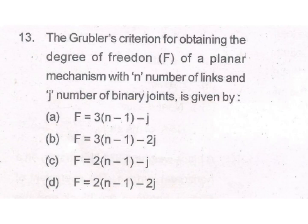The Grübler's criterion for obtaining the degree of freedom F of a planar mechanism with N number of links and J number of binary joints is given by F equal to 3N minus 2J. From the options, B is the answer.